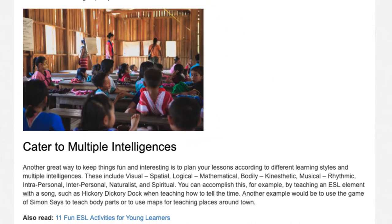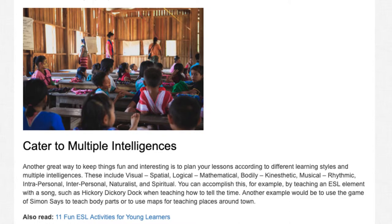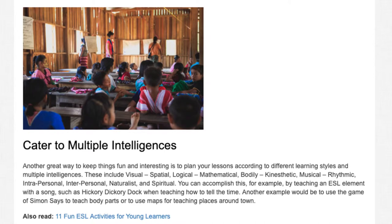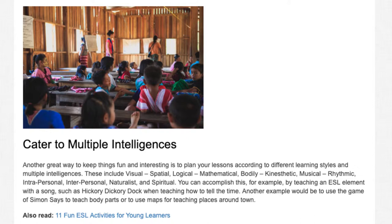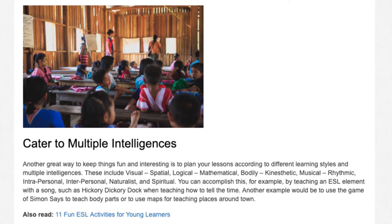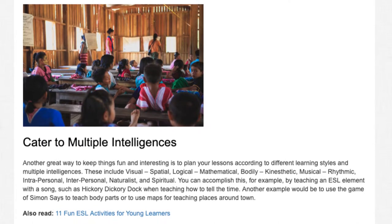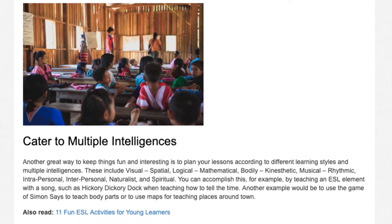Cater to multiple intelligences. Another great way to keep things fun and interesting is to plan your lessons according to different learning styles and multiple intelligences. These include visual, spatial, logical, mathematical, bodily, kinesthetic, musical, rhythmic, interpersonal, naturalist, and spiritual. For example, you can teach an ESL element with a song, such as Hickory Dickory Dock when teaching how to tell the time. Another example would be to use the game of Simon Says to teach body parts, or to use maps for teaching places around town.